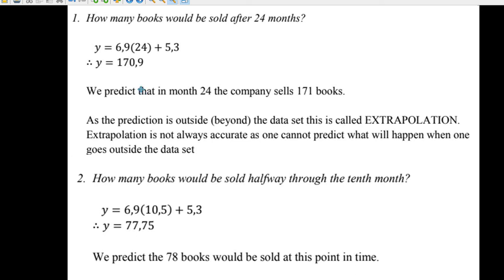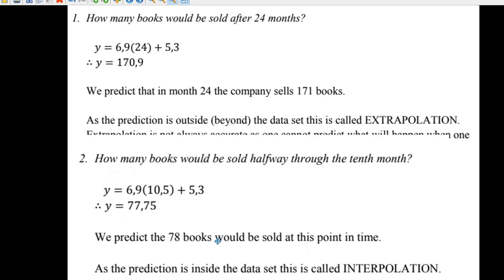How can you use that? Well, say they asked you how many books would be sold after 24 months. After 24 months, well, you put 24 in there. And you get this number when you put it in, 170.9 books. That's called extrapolation. That's way beyond your graph. And it's a little bit dangerous, extrapolation sometimes. But that would be your prediction. What would be a little bit better is how many books were sold halfway through the 10th month. You put in 10.5 into your formula and you'll get a prediction for how many books would be sold. And that's called interpolation.